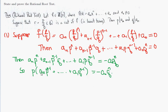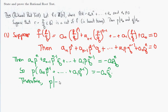The expression inside the parentheses is an integer, since by assumption all the aᵢ are integers because f has integer coefficients, and p and q are integers because r = p/q is written in lowest terms. So the left-hand side is p times an integer, and therefore p divides negative a₀·qⁿ.